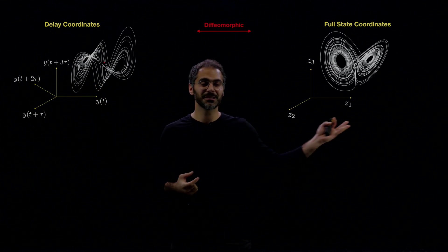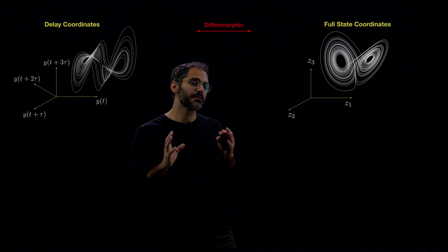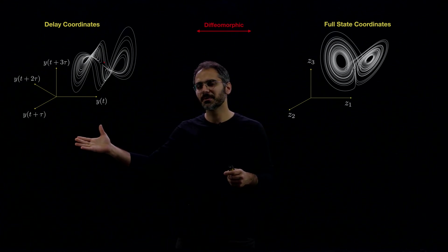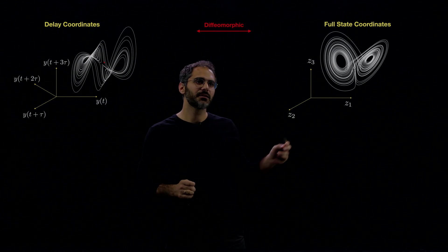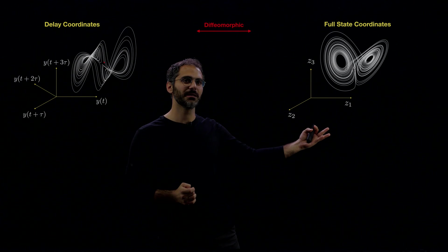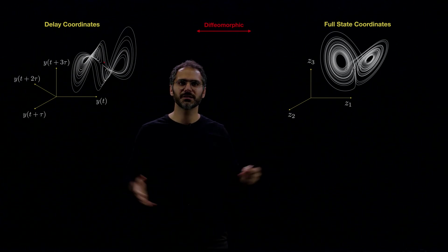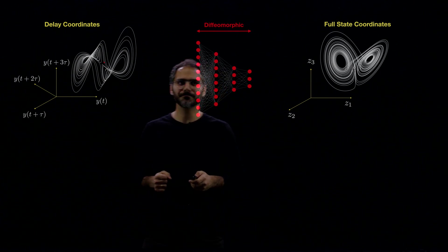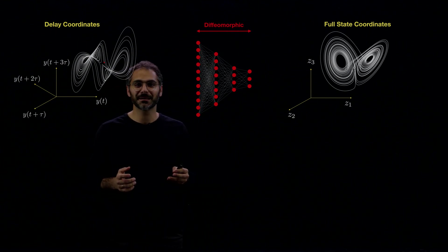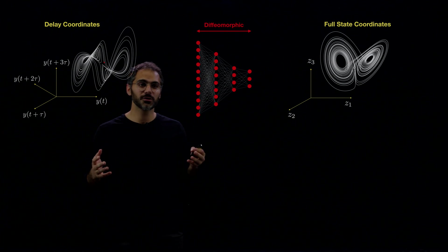And we know that this coordinate system will certainly be much higher dimensional than this coordinate system. In fact, the Takens' embedding theorem says that this coordinate system should be at least two times the dimension of this coordinate system plus one. So if this is three, this has to be at least seven. And what better than a neural network to make that approximation? More specifically, an autoencoder.